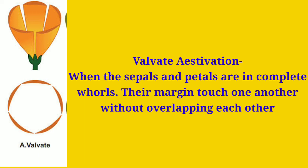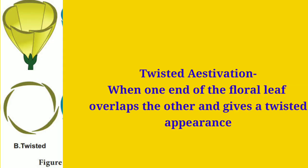In twisted aestivation, one end of the floral leaf overlaps the end of the neighboring one, and in turn its other end is overlapped by the next, giving a twisted appearance. This is found in china rose. The petals are arranged so that one end is free and the other end goes to the inner side of the adjacent petal, making the whole turn by overlapping with each other.